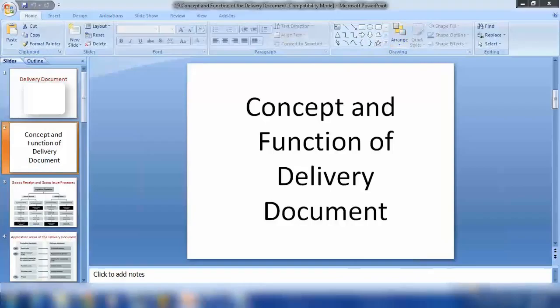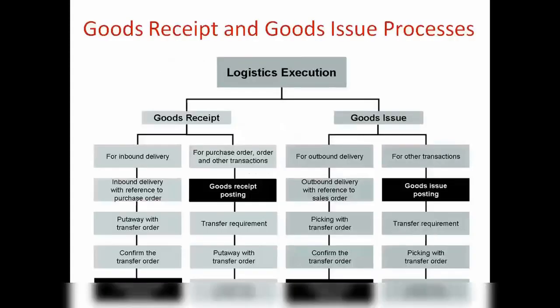First we'll see the overview and then go into the customizing of delivery. In logistics execution, there are basically two types of processes: goods receipts and goods issue. So far what we have seen was goods issue — we created a sales order first, and from the sales order we do the outbound delivery, meaning we are doing goods issue.